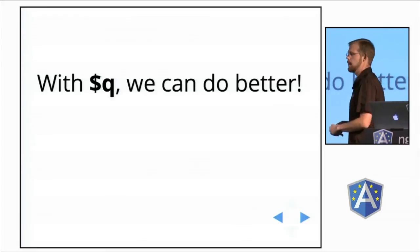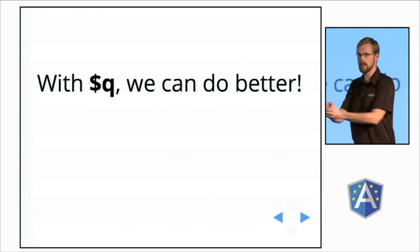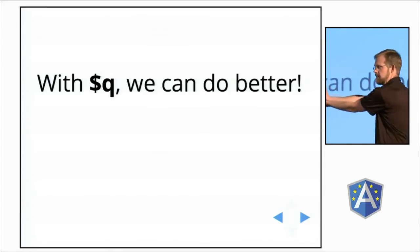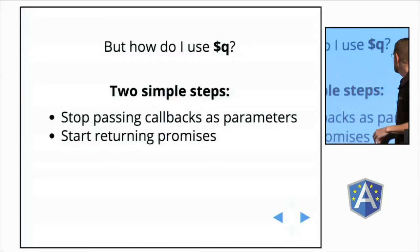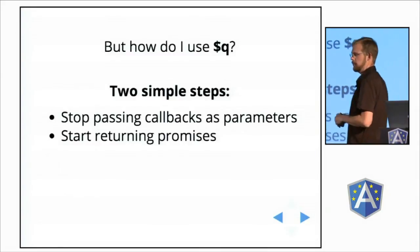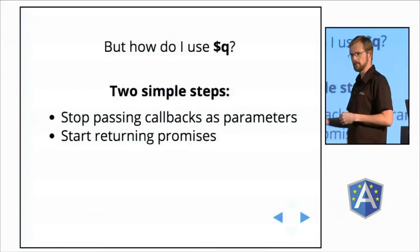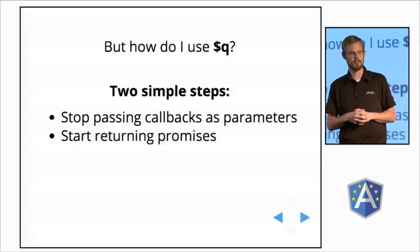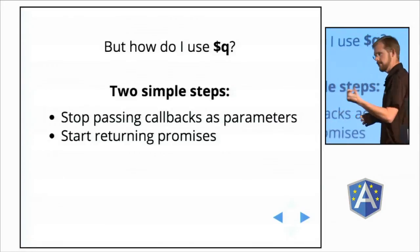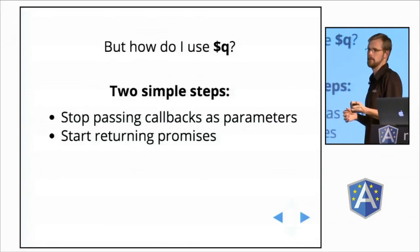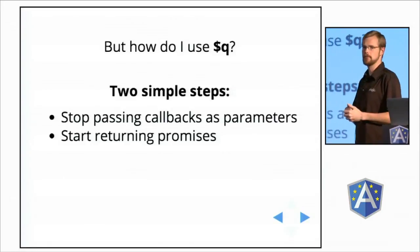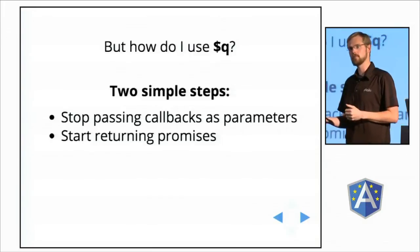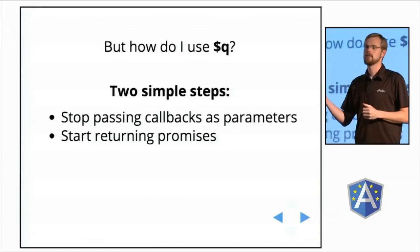We can do better with Q — we can shoot blue flame from our hands and do better. It's just a simple two-step process to switch from callback passing to using promises. Step one: stop passing those callbacks as parameters. And step two: start returning promises.